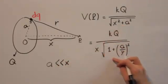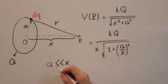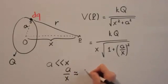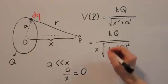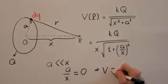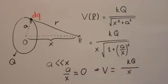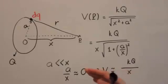When a is really small compared to x, we have a over x close to zero, and V becomes k Q over x. It looks similar, and actually, it is the electric potential due to a point charge. This equation makes sense because at a distance really far away from the ring, we can consider the ring as a point charge.